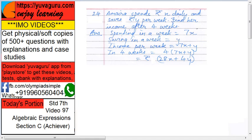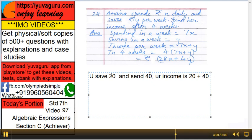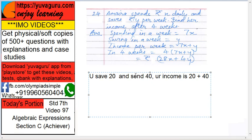Now let's take an example. You save Rs.20 and spend Rs.40. Then your income will be 20 plus 40, because out of that only you will be spending something and saving something. So it will be 60. You have to add them.